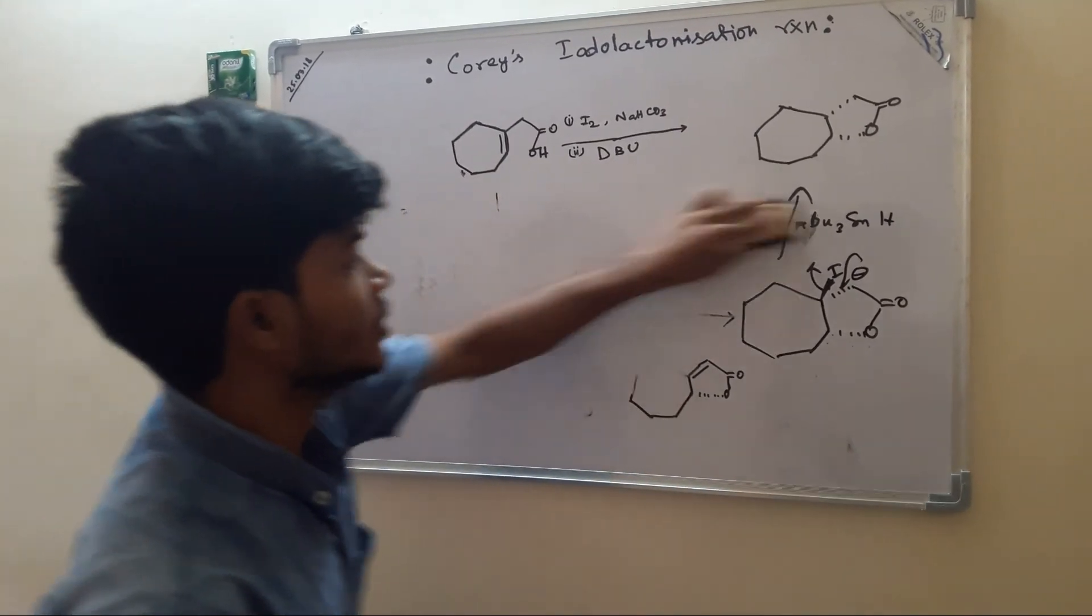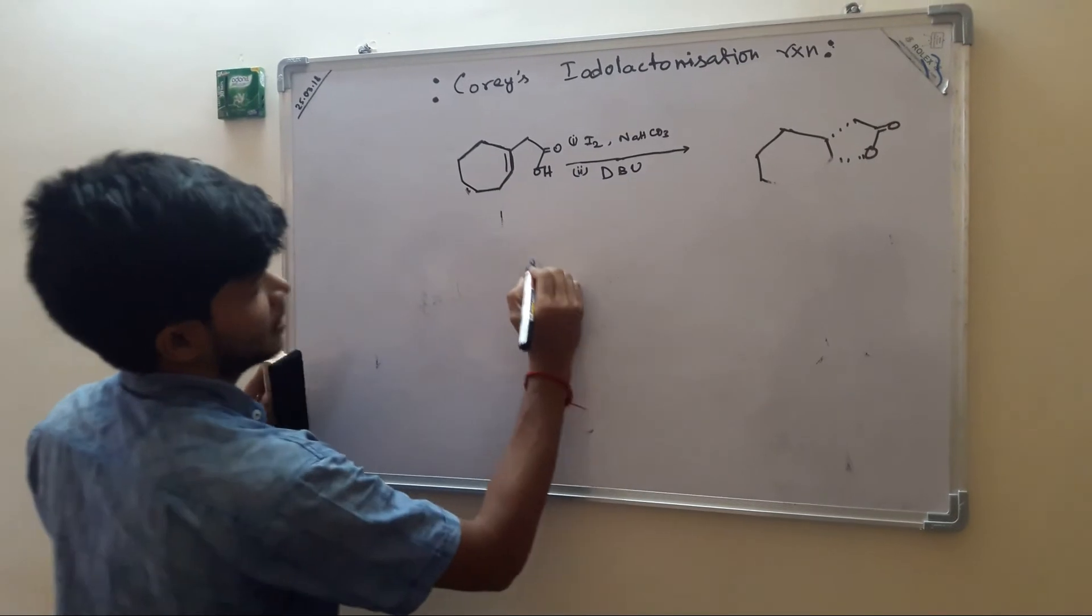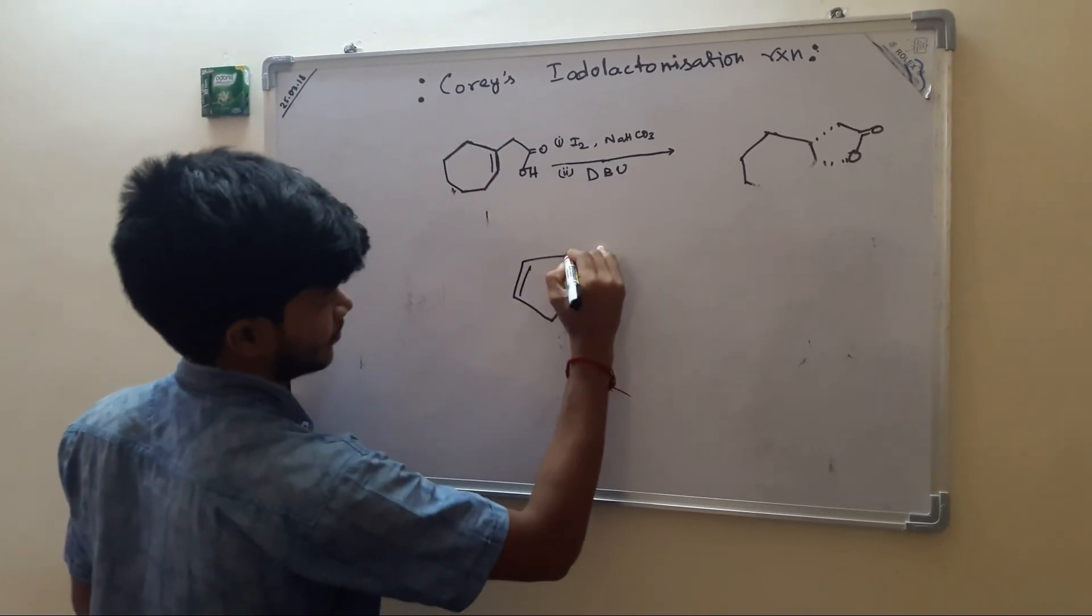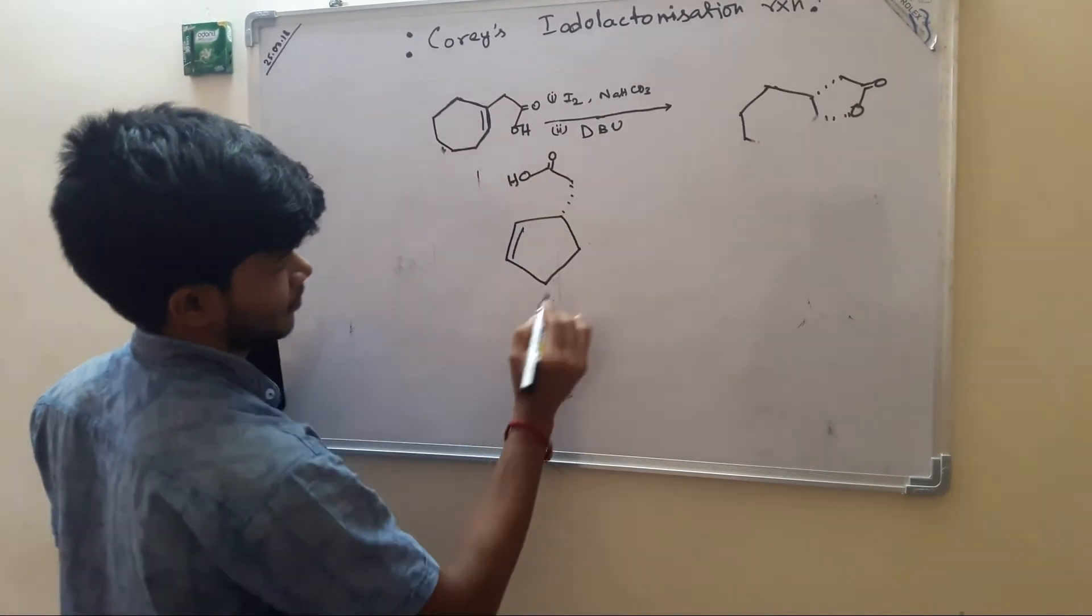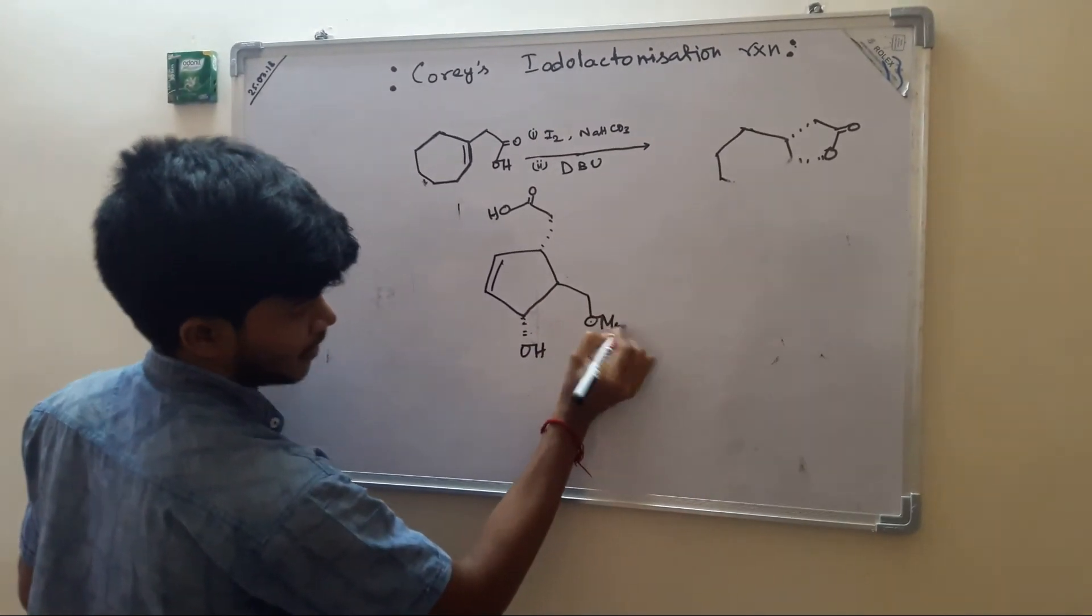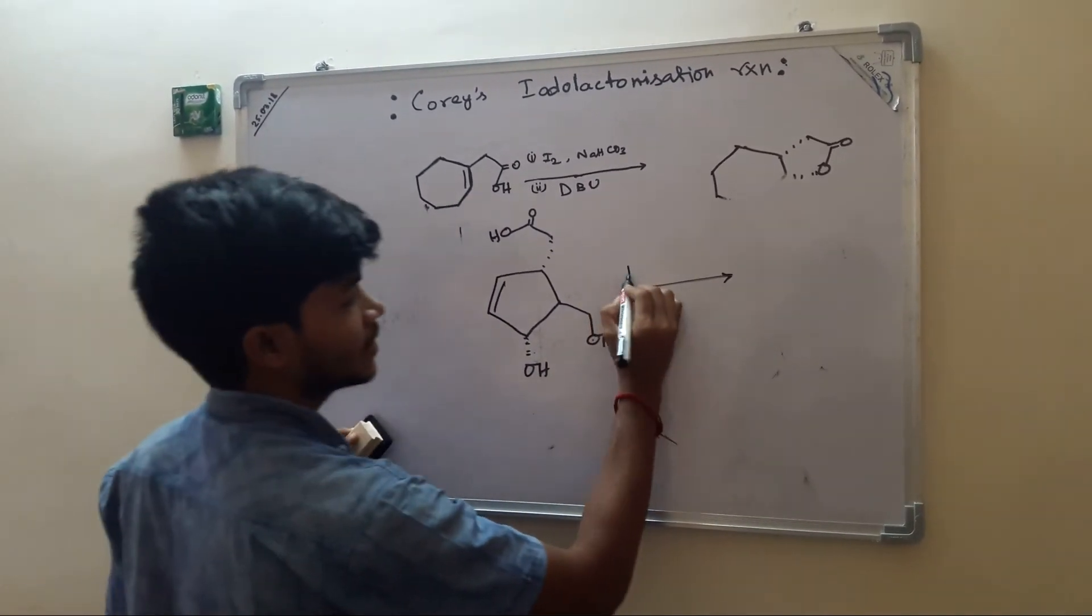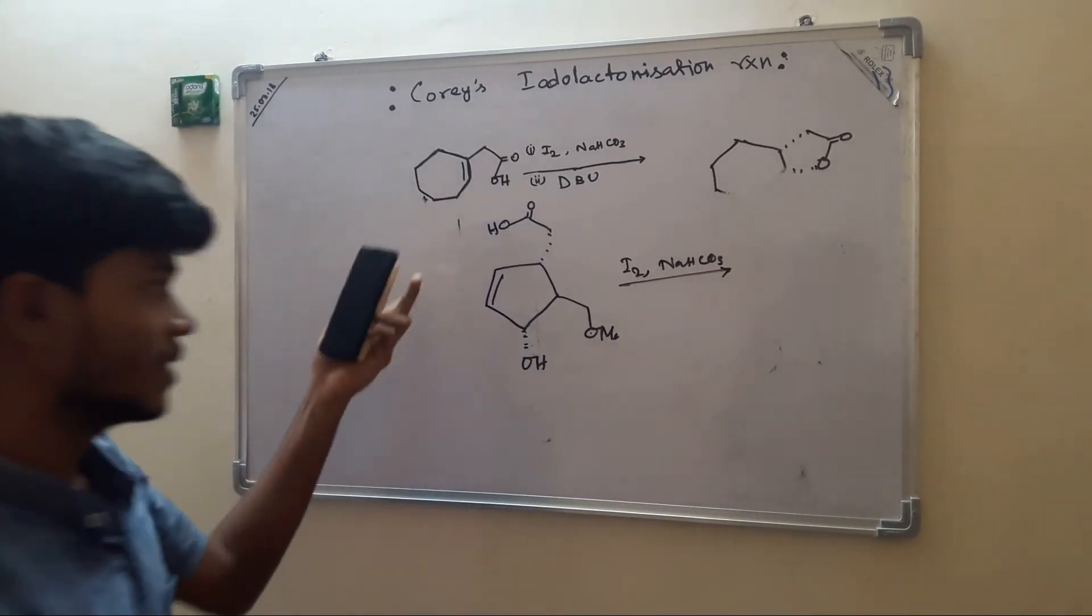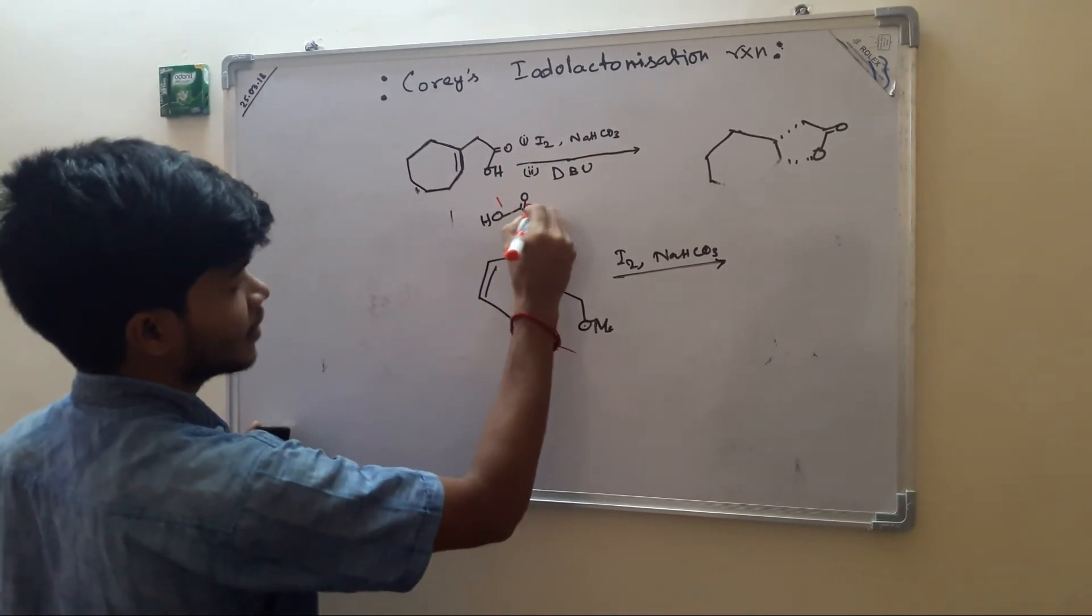Which I will show you with the help of another example. This is one of the intermediate steps in prostaglandin synthesis. If we treat it with iodine and sodium bicarbonate, then similar reactions will happen. And there will be five-membered ring formation.